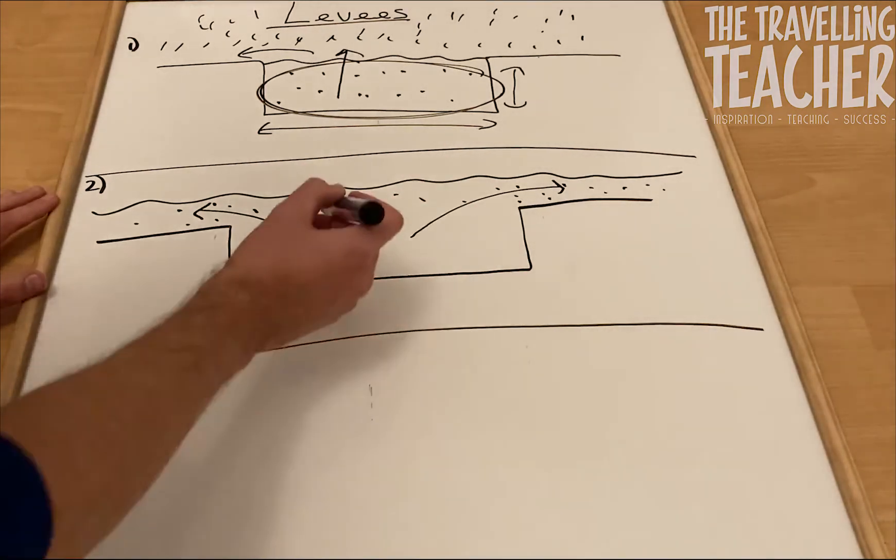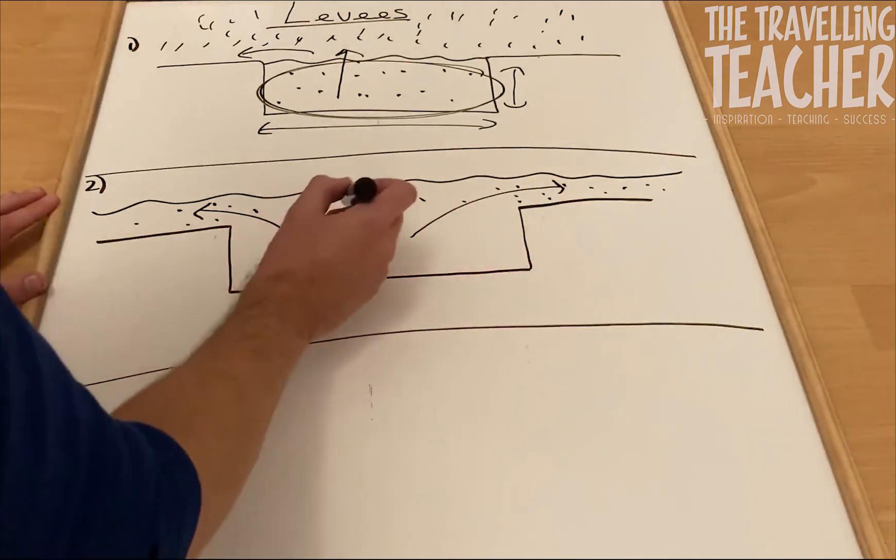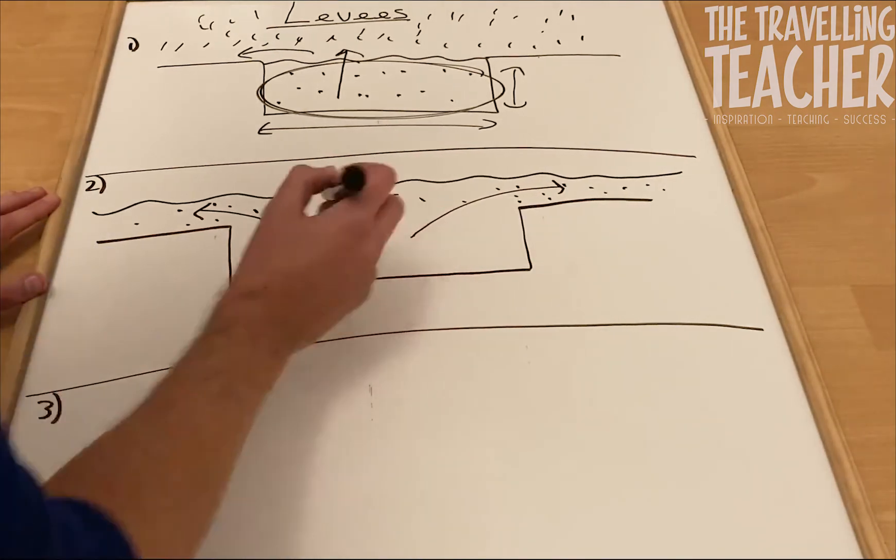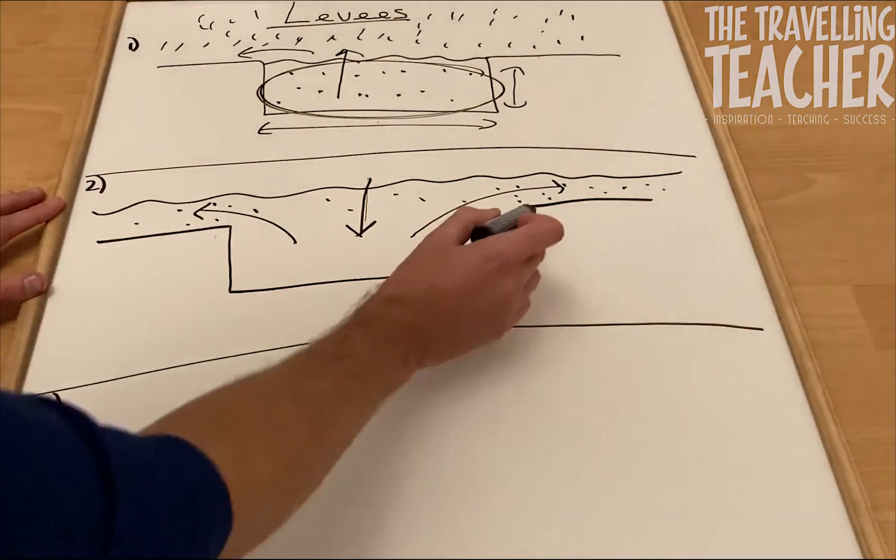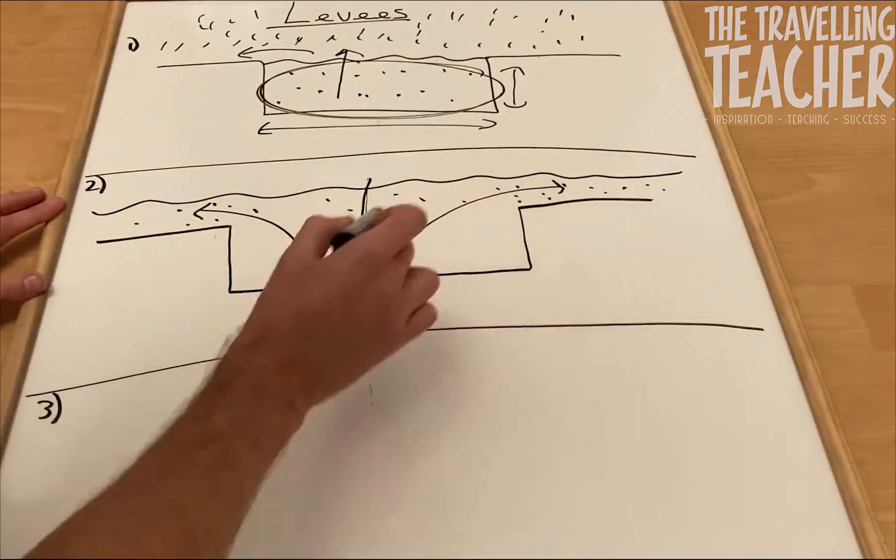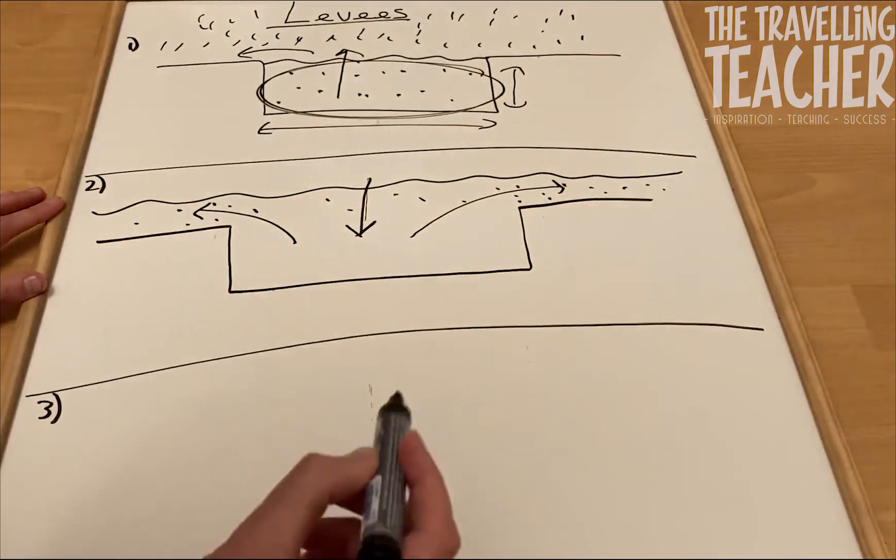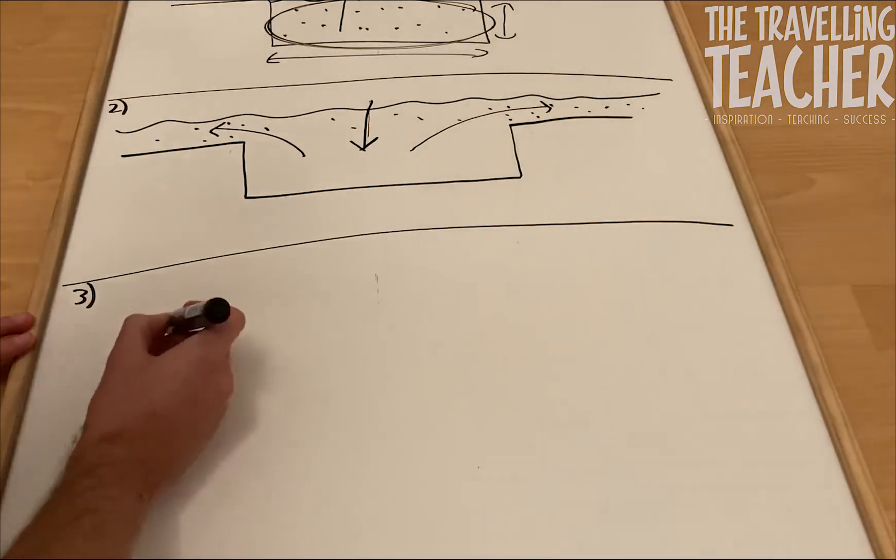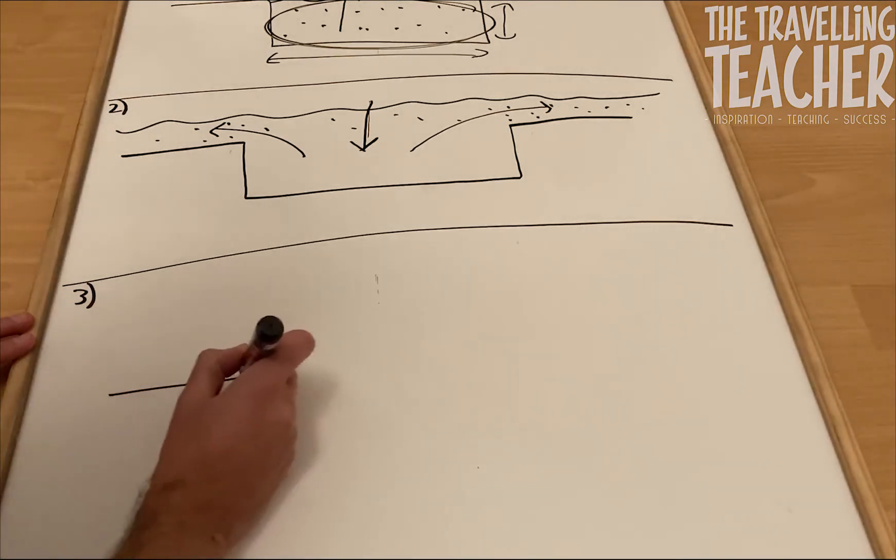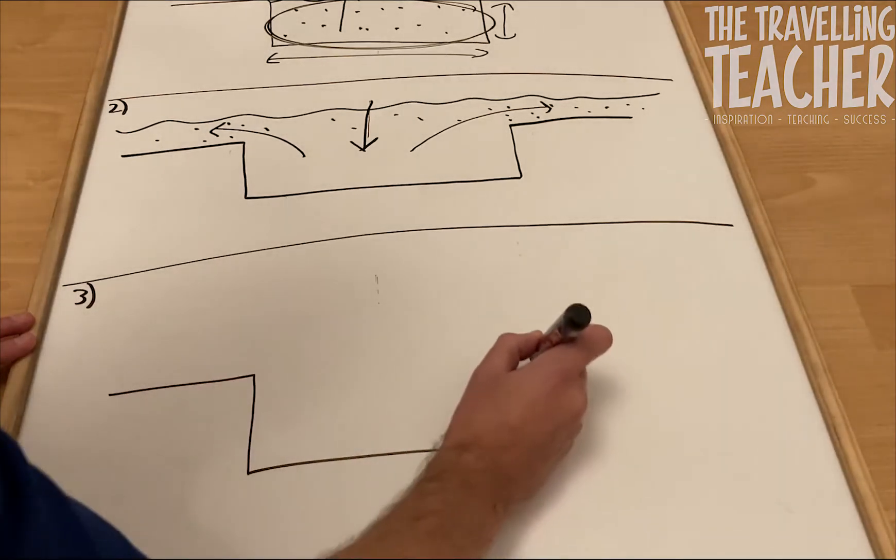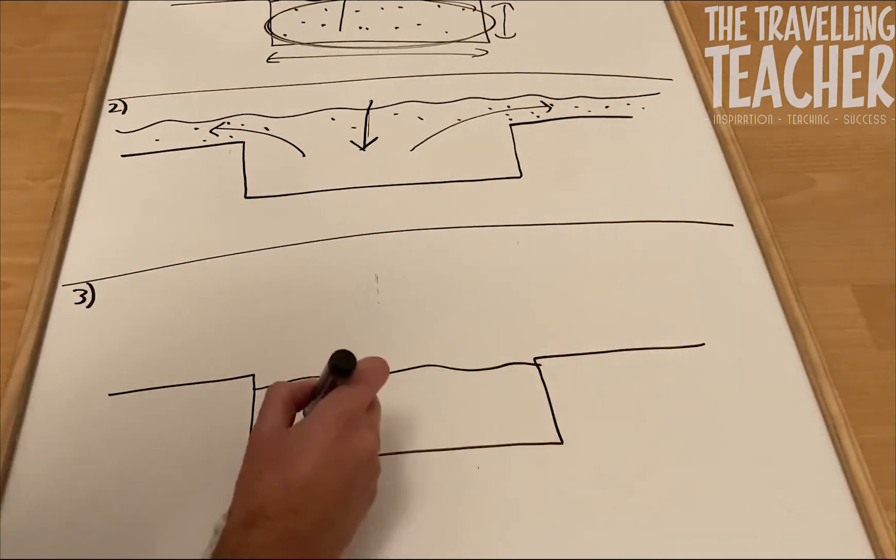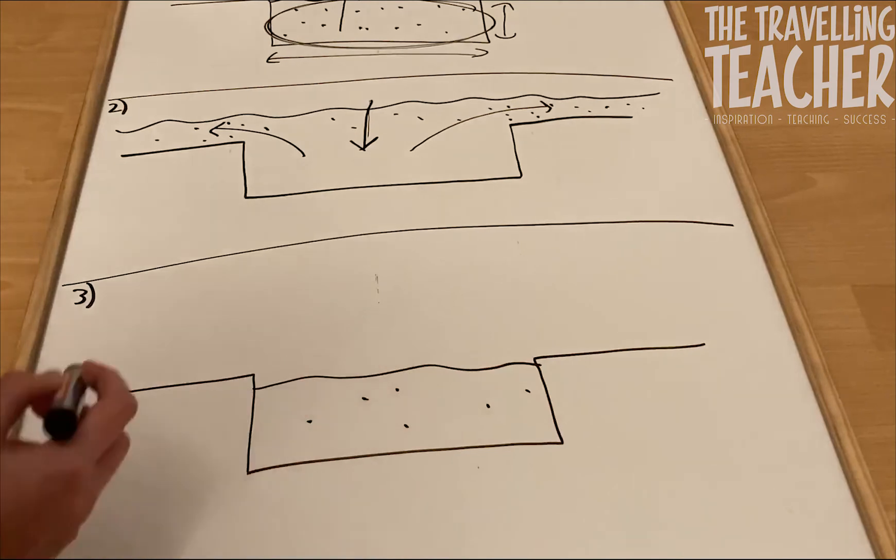But over time, this water level, it will eventually return to normal. It's going to come down. But it's what happens to the sediment which is now on the flood plain. So I'm just going to move my board up a little bit. Right, diagram three, final one. So there's our river channel. And there's our water level, back to normal. Got a bit of sediment in it.